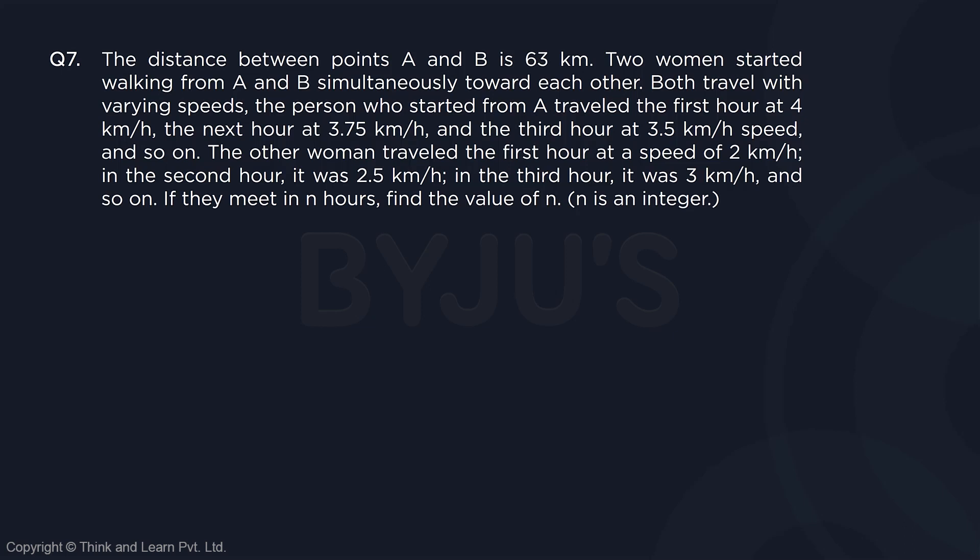Next, question 7. The distance between two points A and B is 63 kilometers. Two women started from A and B simultaneously towards each other. Both travel with varying speed. The person who started from A traveled the first hour at 4 kilometers, then 3.75, then 3.5, and so on and so forth.